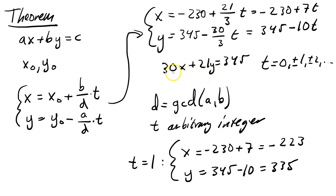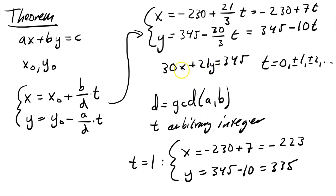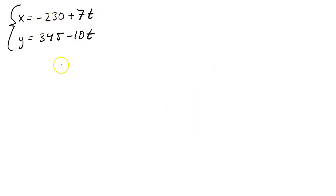However, remember that we started with a real-world problem about balls in a box. The number of balls x and y can only be non-negative — we cannot have a negative number of balls. So now we are interested in finding only solutions where both x and y are non-negative integers, i.e., natural numbers.